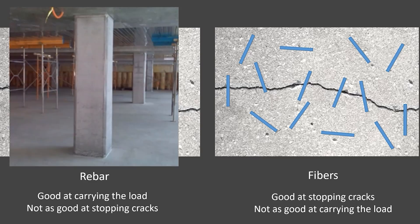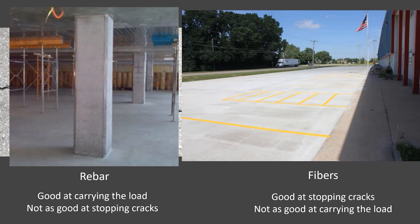So for rebar, we typically use it in structural applications like columns and beams, and we're going to use that for a long time. That's what rebar is amazing at. Now fibers, they're great at flatwork like slabs. You can use them in elevated slabs, slabs on ground, lots of other different applications.